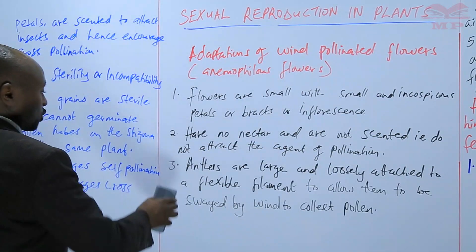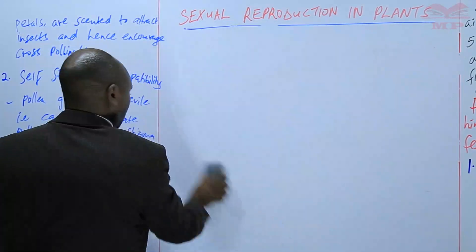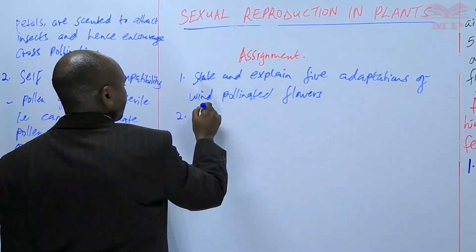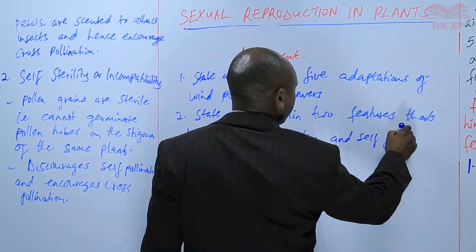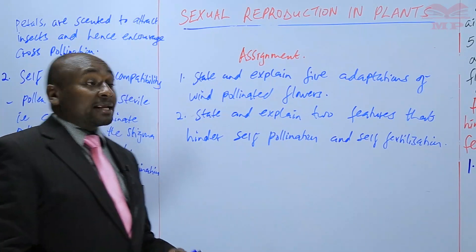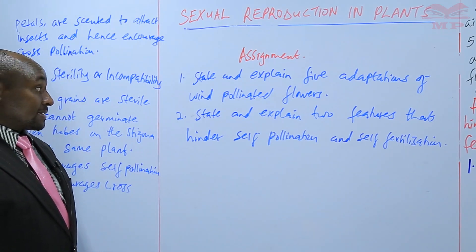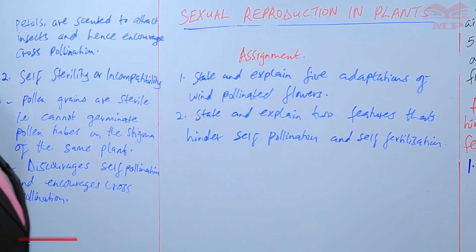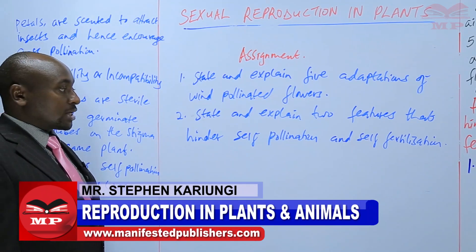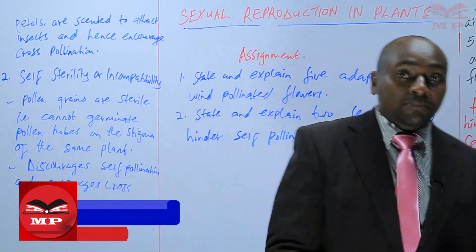We'll have a short assignment on what we have learned. The assignment for today: question one — state and explain five adaptations of wind-pollinated flowers. Number two — state and explain two features that hinder self-pollination and self-fertilization. We're going to meet next time. Goodbye.